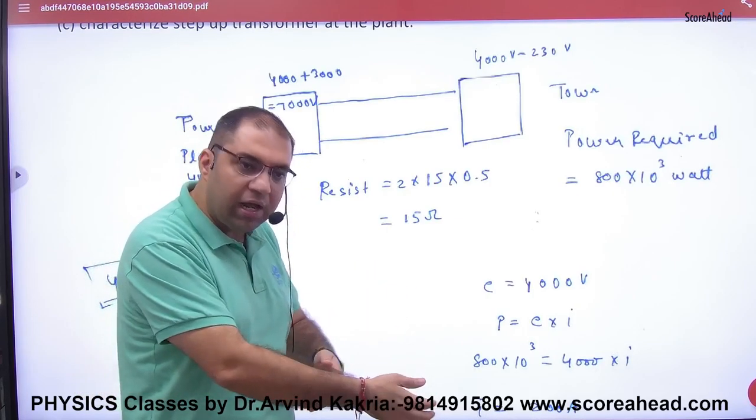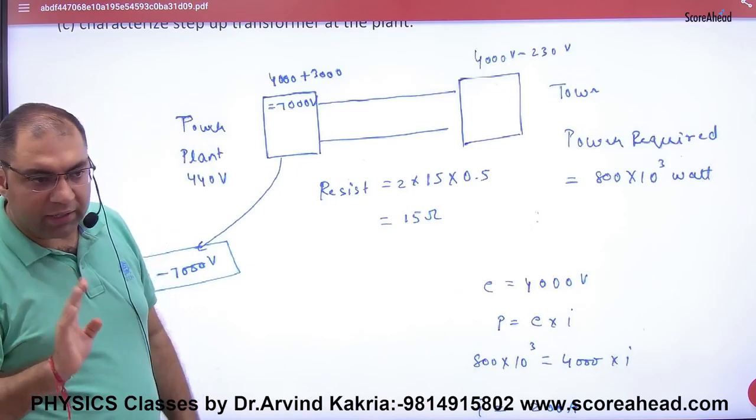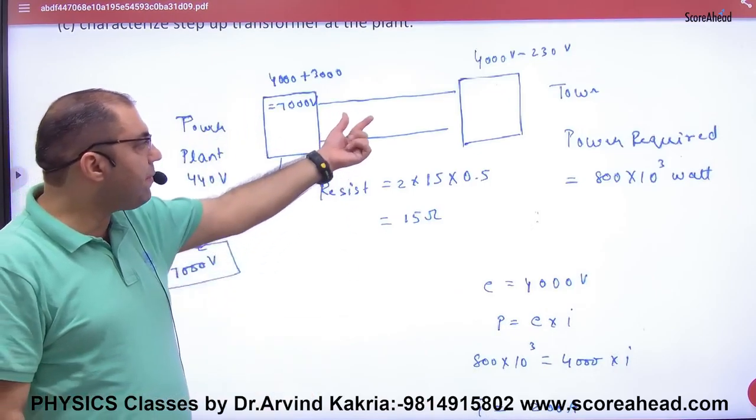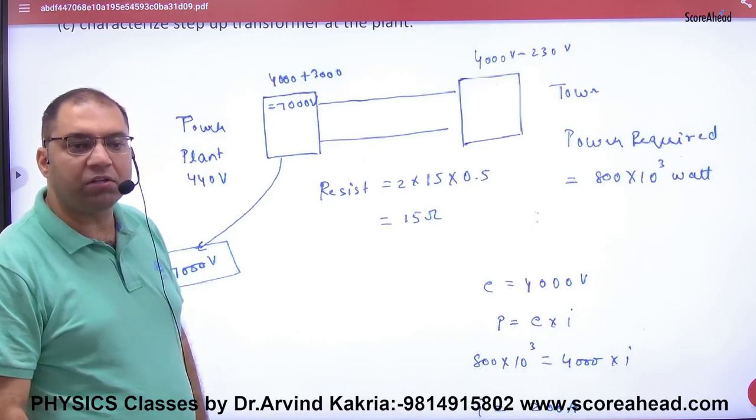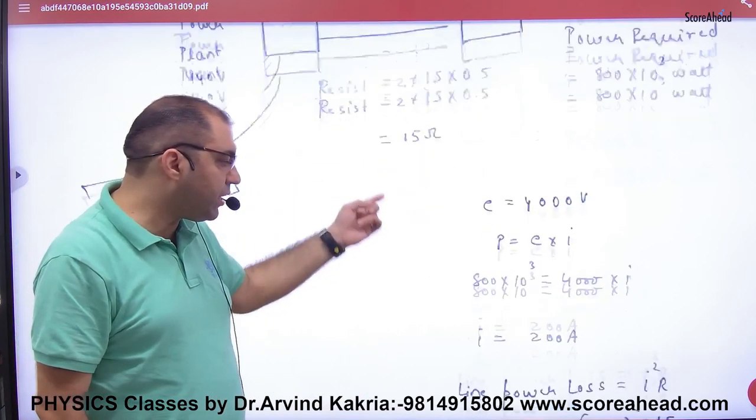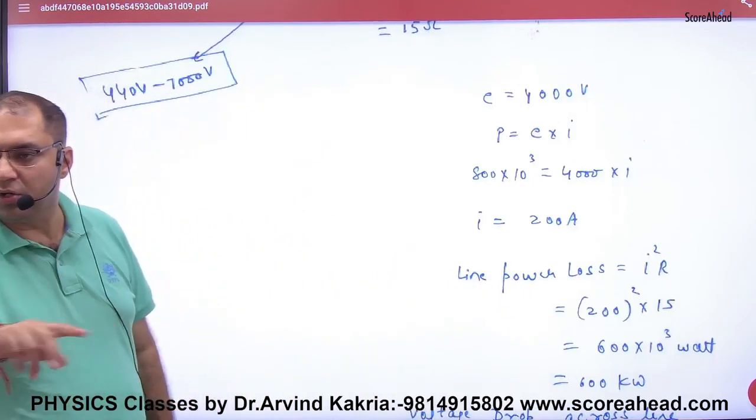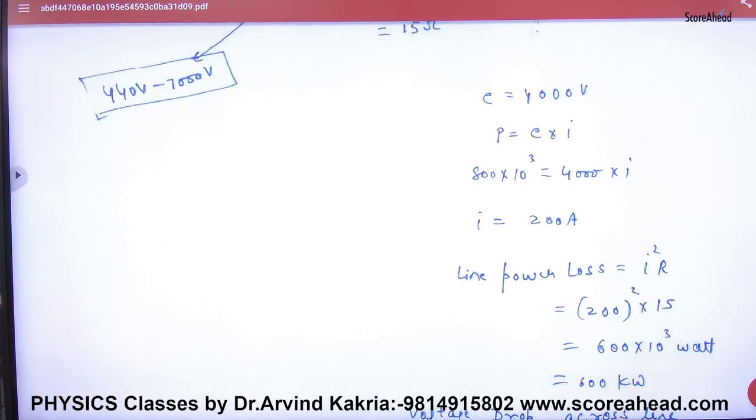So one answer is how much power loss: i²r = 200 ampere, resistance is 15 ohm, i²r = 600 kilowatt power loss. This is the answer.